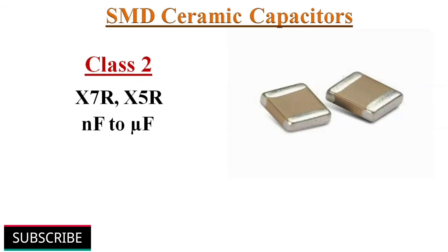Class 2 ceramic capacitors are X7R and X5R types, usually in light brown color. They are suitable for higher capacitance applications, with capacitance values ranging from nanofarads to microfarads.